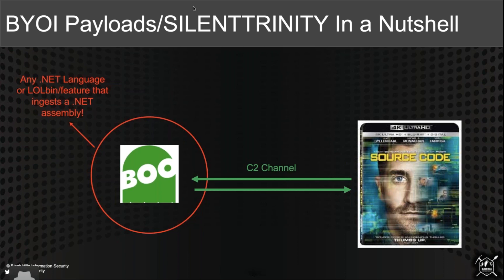At a high level, we're taking the Boolang interpreter and embedding it in any .NET language we want to. The reason we can do this is obviously because they're all based on the same framework, so they're all interoperable with each other. You can take PowerShell embedded into C#, C# into PowerShell, Boolang into PowerShell, into C# — all these languages are interoperable because they're all based on the same underlying framework. We then just throw source code at the Boolang interpreter and it executes.